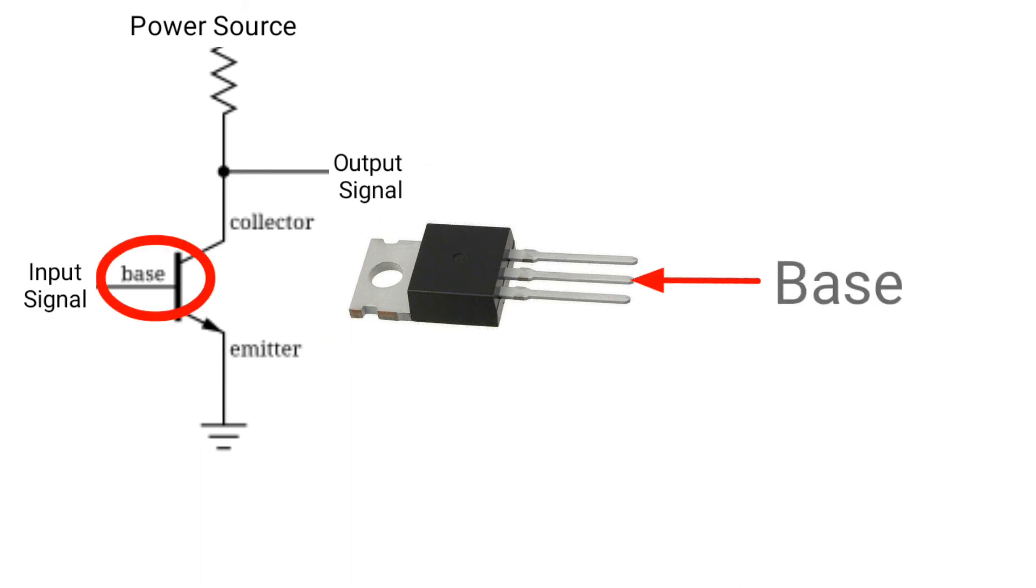Base: the middle section of the transistor is known as the base. The base forms two circuits, the input circuit with the emitter and the output circuit with the collector. The emitter base circuit is in forward bias and offers low resistance to the circuit. The collector base junction is always in reverse bias. Its main function is to remove the majority charges from its junction with the base.